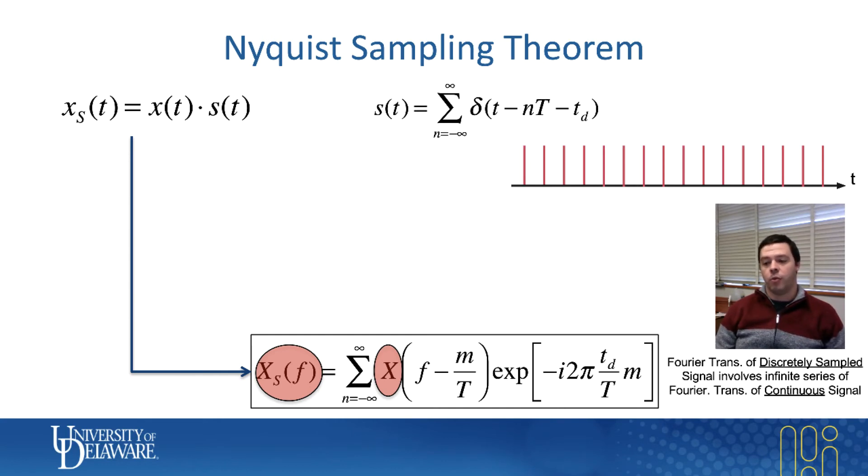So what I'll point out is that the thing on the left-hand side, which is the Fourier transform of the sample signal, guess what? That is exactly the thing that a lock-in amplifier detects.